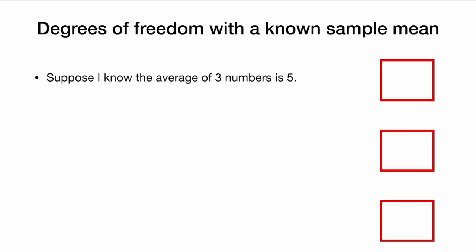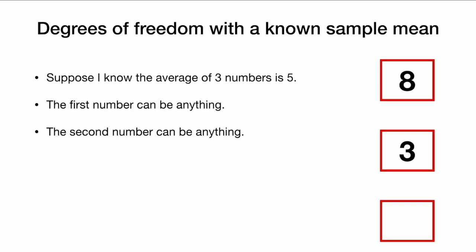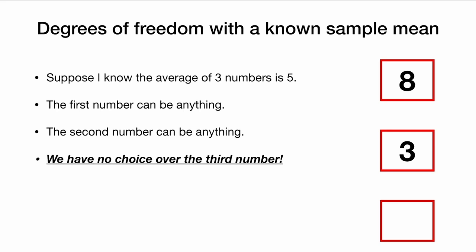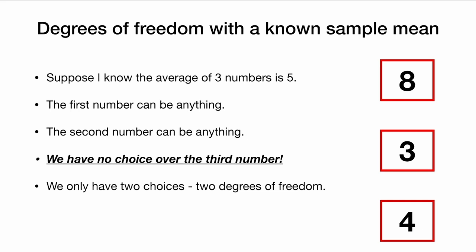One more relevant example: degrees of freedom with a known sample mean. Suppose I know that the average of three numbers is five. The first number can be anything — let's say it's eight. The second number can be anything — let's say it's three. But we have no choice over the third number. Since the average is five, they have to add up to 15, so the third number must be four. We only have two choices — two degrees of freedom.